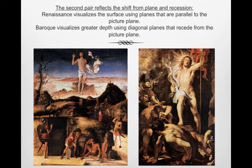The second pair reflects the shift from plane to recession. Renaissance visualizes the surface using planes that are parallel to the picture plane. Baroque visualizes greater depth using diagonal planes that recede from the picture plane. Objects in the planar painting are usually laid out parallel to the picture plane — we tend to see the flat sides of things, and depth is signified by a succession of parallel lines into space. In the recessional painting on the right, objects turn corners to the viewer, enhancing the diagonal, and there is a greater sense of motion up to and away from your eye within the painting.